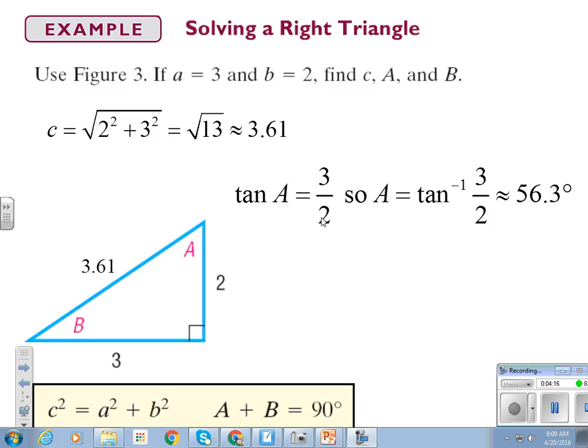We want to make sure we use, if it's available to us, that we use numbers that are not rounded, not approximated. Sometimes we're going to be backed into a corner and we have to, but it's preferable to use our exact values. So, tangent of A is opposite over adjacent, 3 over 2.